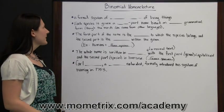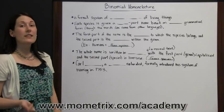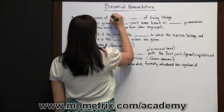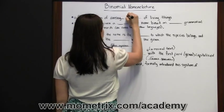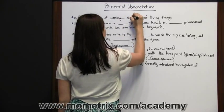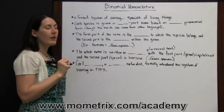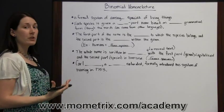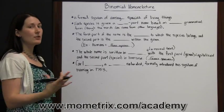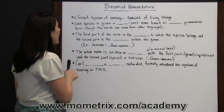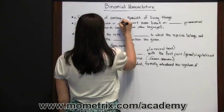Binomial nomenclature is a formal system of naming species of living things. It helps keep all the different species of living things organized — a formal system used throughout the world. Each species is given a two-part name.